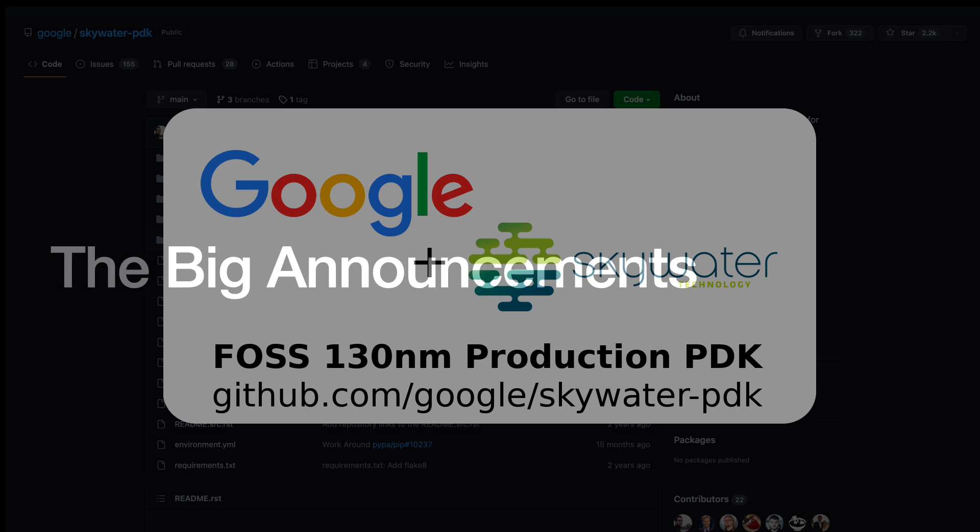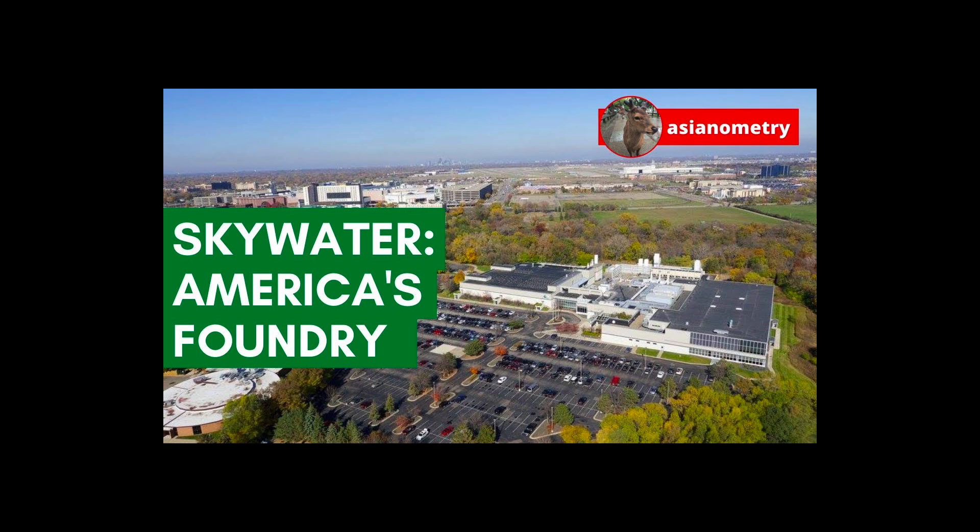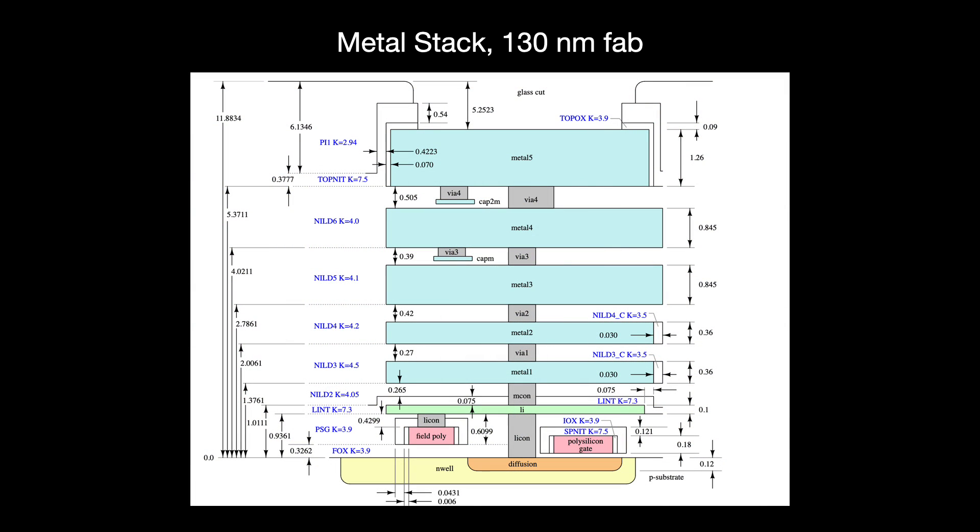Probably the biggest happenings for this space in the past year were Google's announcements that they had partnered with Skywater, eFabless and now Global Foundries to make it possible for people to actually fab their custom silicon designs. I did a video about Skywater before. They are one of the few PurePlay foundries left in the United States. Google partnered with them to open source the PDKs for their 130nm process node. A PDK, or Process Design Kit, is a set of design rules and physical limitations packaged with simulators, third-party pre-designed IP libraries, design rule checkers, and other design tools.